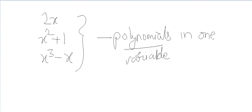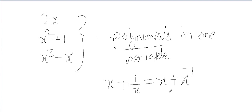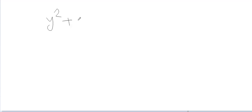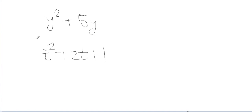Polynomials are basically expressions in which the variable has only whole numbers as its powers. For example, x plus 1/x can be written as x plus x to the power minus 1, and this is not a polynomial because minus 1 is not a whole number. Similarly, y squared plus 5y and t squared plus 2t plus 1 are also polynomials in one variable.